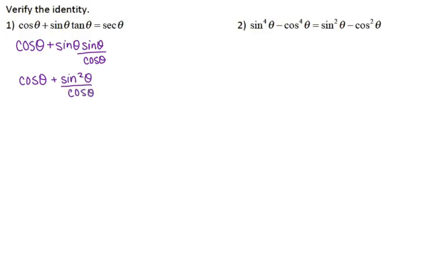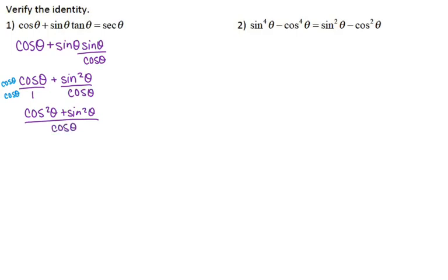I have two separate things that I'm adding and I need to condense it to a single fraction, because my goal is to get one trig function. In order to add fractions we need a common denominator, so cosine over one — I'm going to multiply by cosine over cosine. That gives me cosine squared plus sine squared all over cosine of theta. One of your Pythagorean identities says sine squared plus cosine squared equals one, so my numerator is one, my denominator is cosine of theta, and one over cosine of theta is secant of theta. Identity verified.